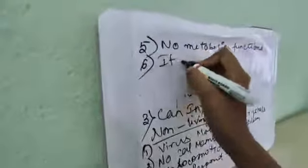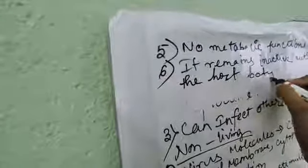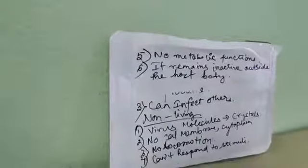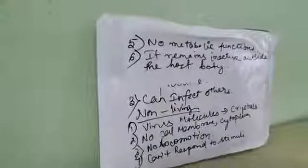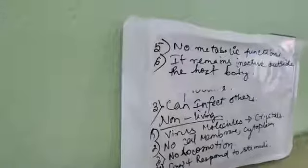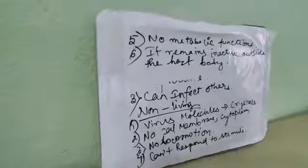Number five: no metabolic functions are taking place within the virus body. Number six: it remains inactive outside the host body. These are the non-living characteristics, which is why the virus is considered as the intermediate between living and non-living. In the extracellular phase, the virus completely behaves like an inanimate object and can be crystallized. In the intracellular phase, the virus behaves like a living object within the host body, and by the help of host enzymes, it can synthesize structural material and multiply.